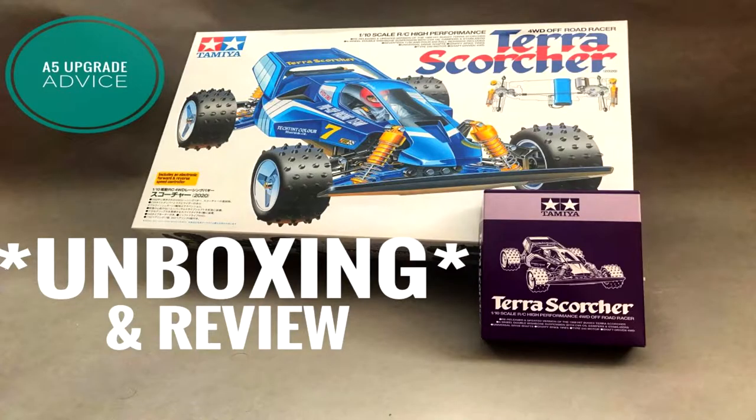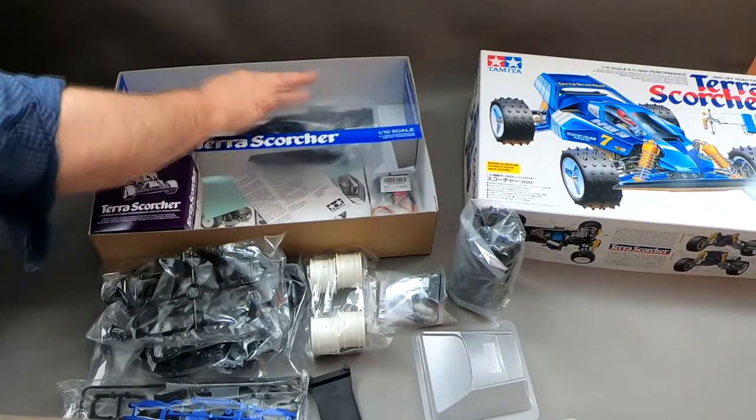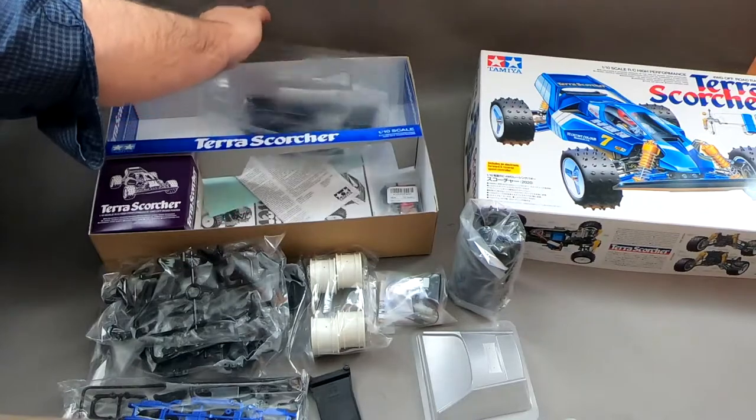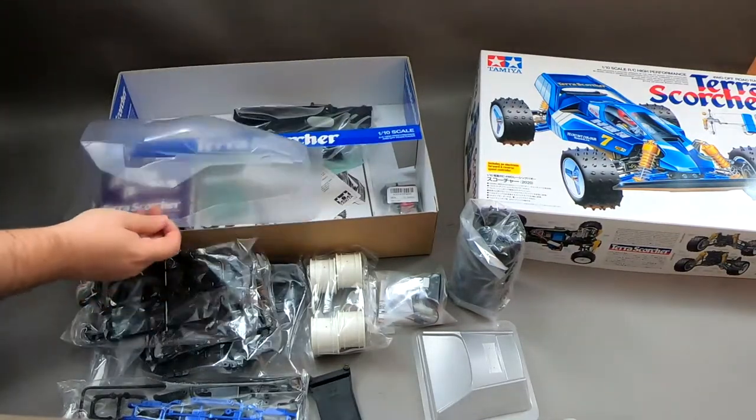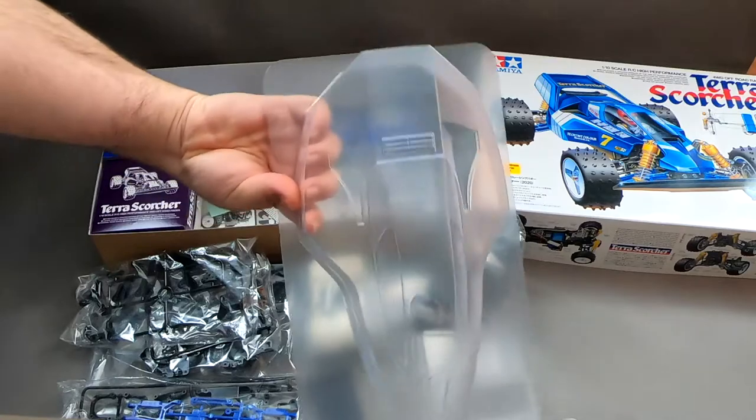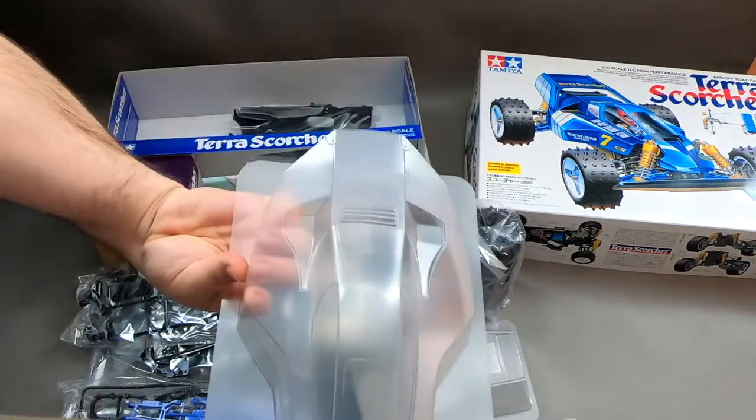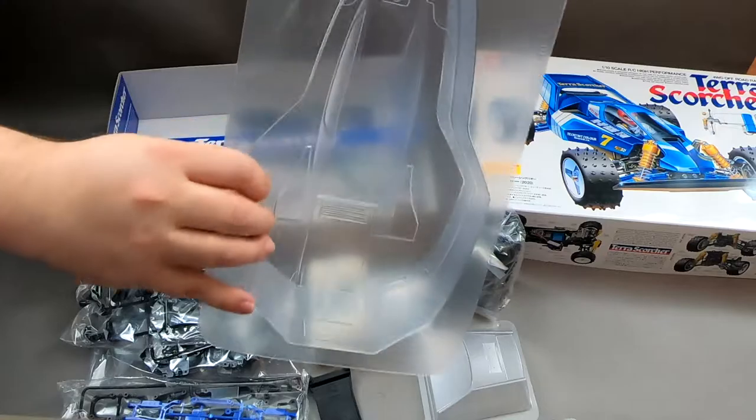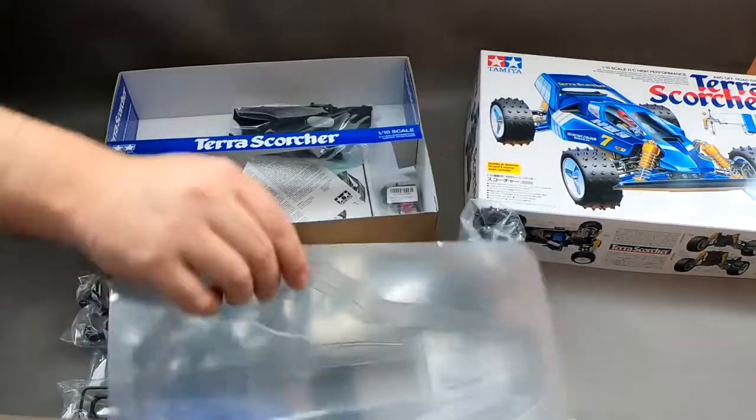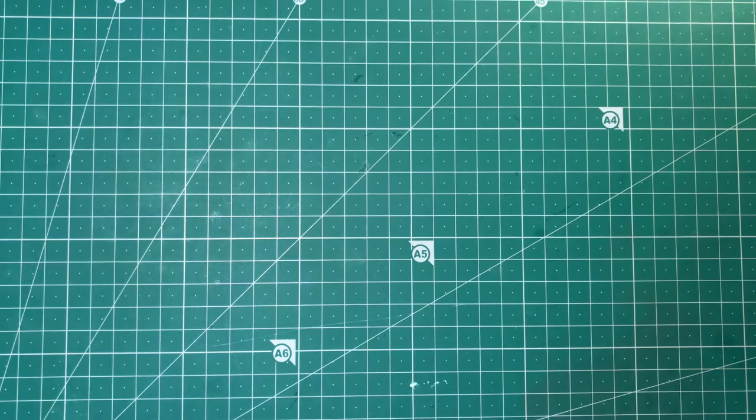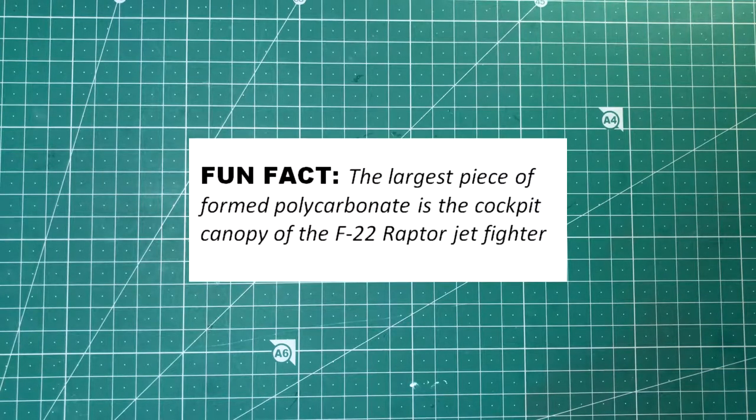recently I bought a Tamiya Terra Scorcher Re-re, and as excited as I was, the daunting factor is that they do not supply window masks for when it's being painted. I am not sure if this is a cost-cutting exercise, or if they like the idea of people panicking. Either way, in reality, I will need to make some. This guide will not only help with the Tamiya Terra Scorcher body, but also any other models where they have not been included. This could also be for redoing spray jobs, or if you have bought a third-party body for your chassis. I hope that this will be of interest.